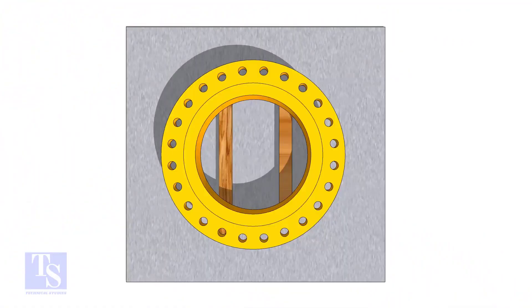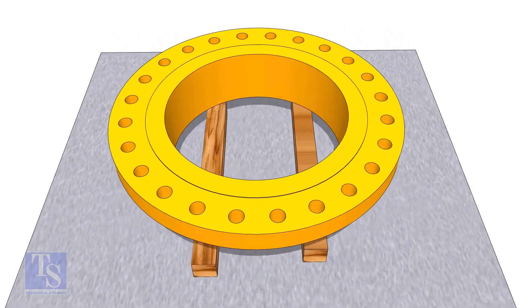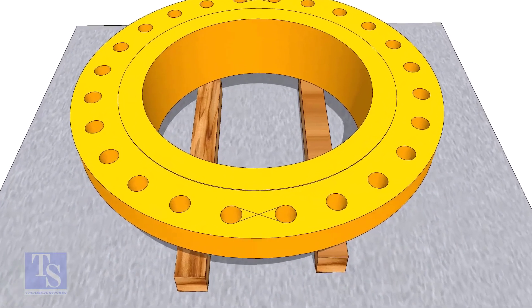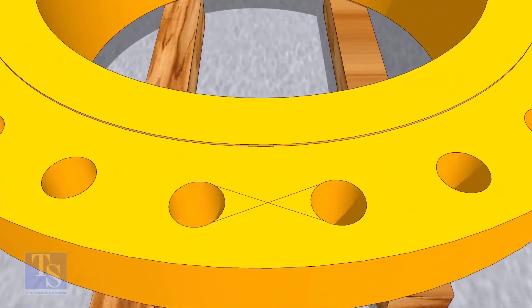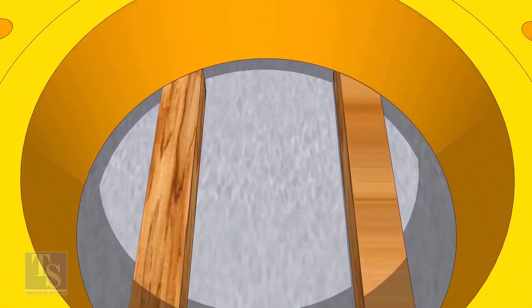In the second method, you need to mark the center line of the flange. Draw tangential lines on two adjacent holes on opposite sides.